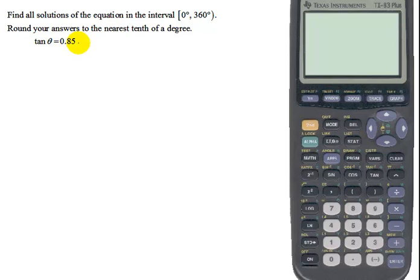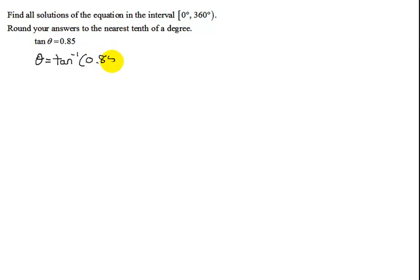So let's look at the problem. The tangent of theta is 0.85. This is not a value on the unit circle, so yes, I'm going to have to use my calculator. And theta is going to be the inverse tangent of 0.85. I need to find the angle whose tangent is 0.85.